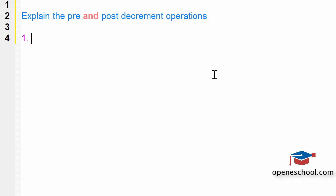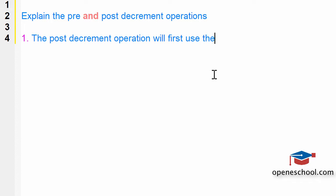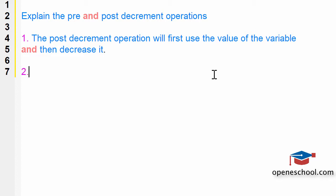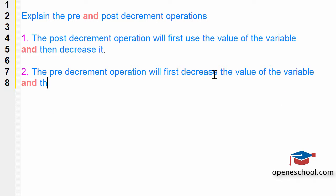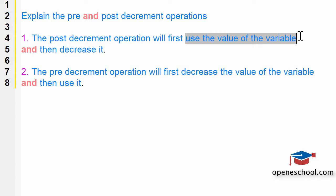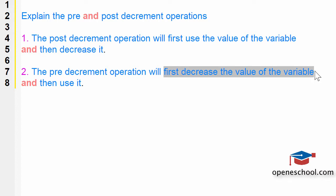The post decrement operation will first use the value of the variable and then decrease it, whereas the pre decrement operation will first decrease the value of the variable and then use it. So before decreasing, the post decrement will first use the value of the variable and then decrease it, whereas the pre decrement operation will first decrease the value of the variable and then use it.